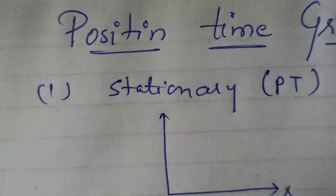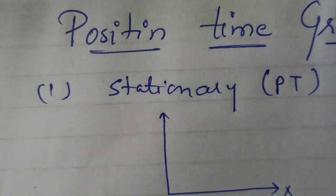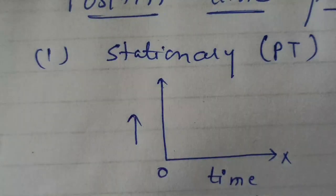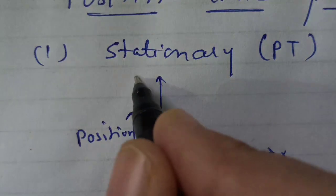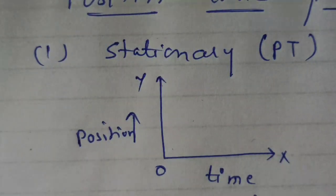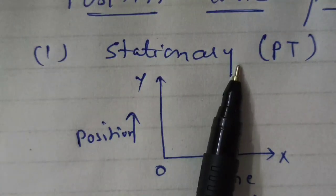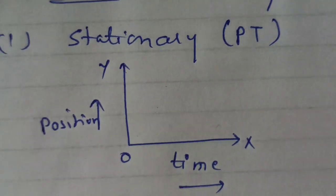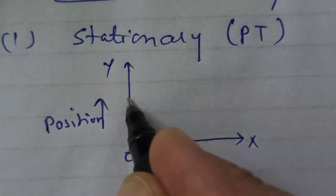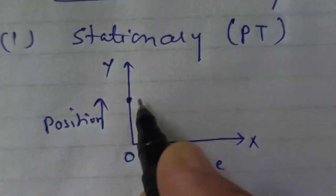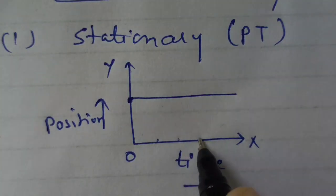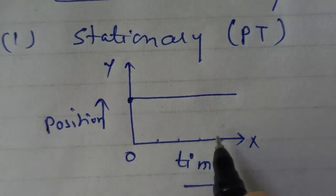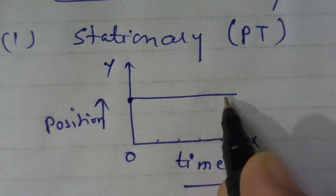On the x-axis we denote time, and on the y-axis we denote position, because we are making a PT graph. In this graph the body is stationary — it cannot move. If it is at a particular position at a particular time, it will remain there no matter how much time passes — one minute, two minutes, three minutes — the body is stationary, so it will be a straight line.